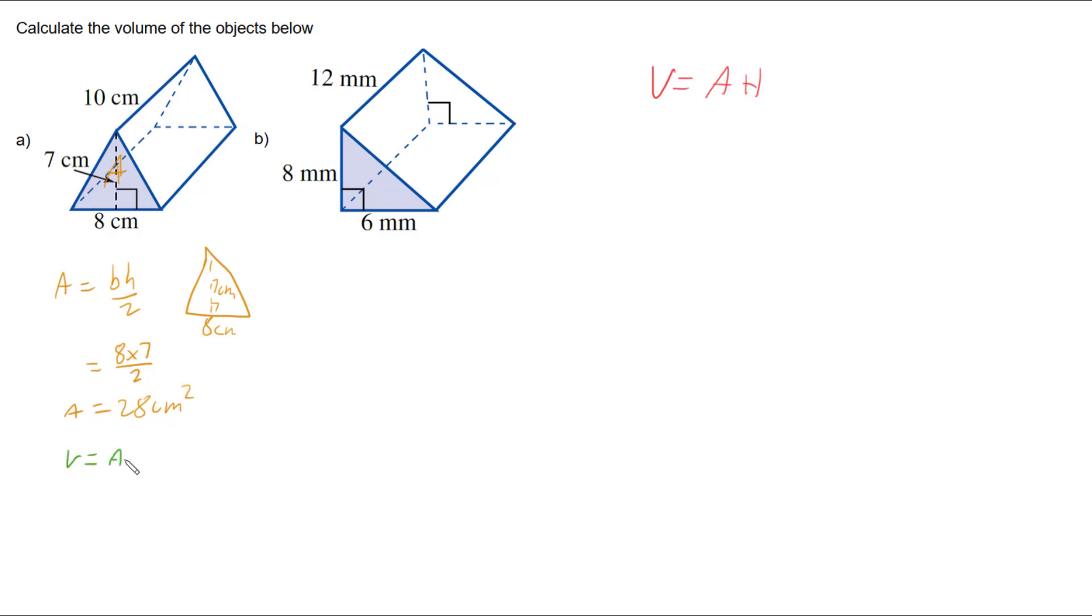The volume is that area times by the height. So we're going to have twenty-eight multiplied by our height, which is this ten centimeters. It might be lying down but it's still technically height because it's the dimension, the length, that extends this triangle through to the far side. So we're going to multiply it by ten. And so our volume is two hundred and eighty centimeters cubed.